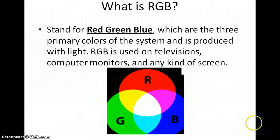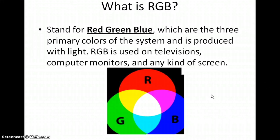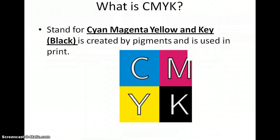What is RGB? It stands for Red, Green, Blue. You have an example at the bottom of the screen showing the three primary colors of this system. RGB is produced with light and is used on televisions, computer monitors, and any kind of screen — including the screen I'm using right now.